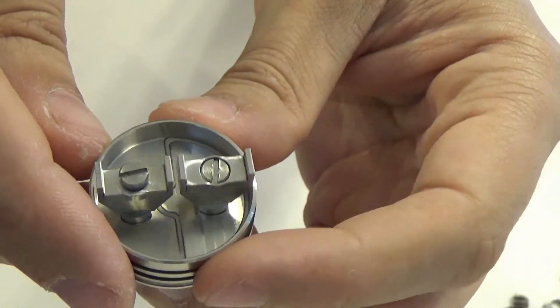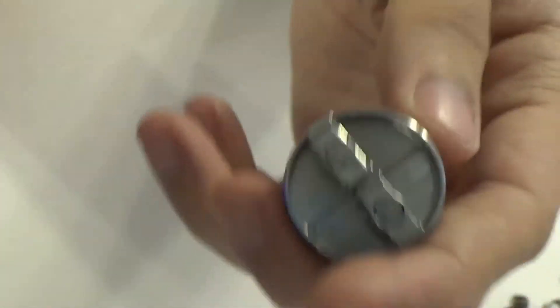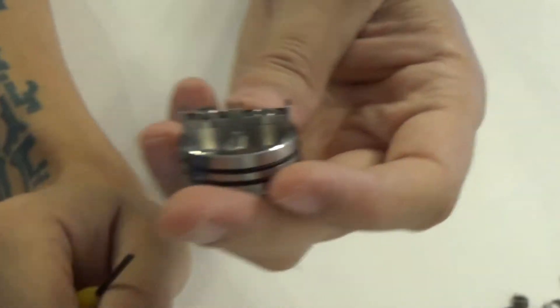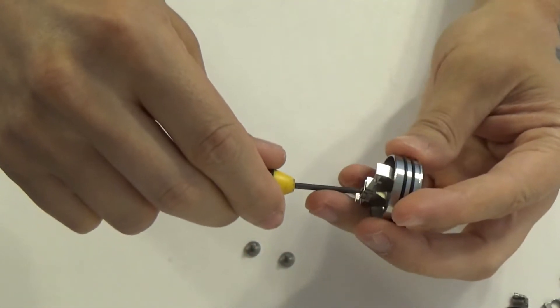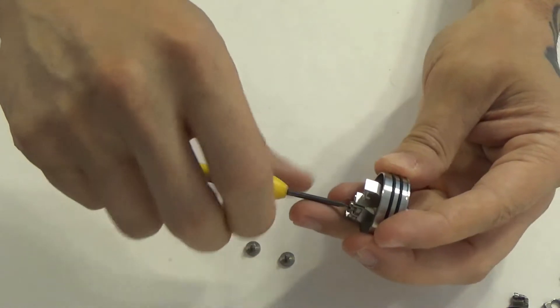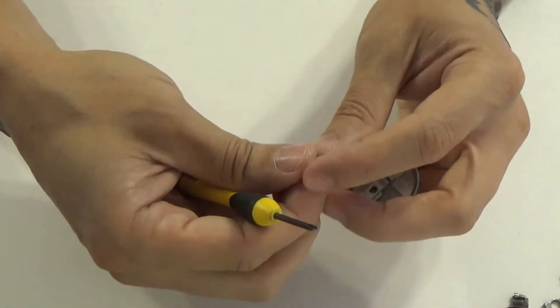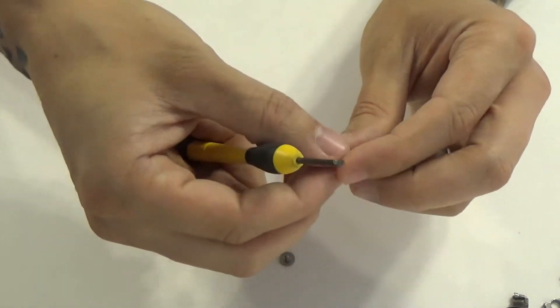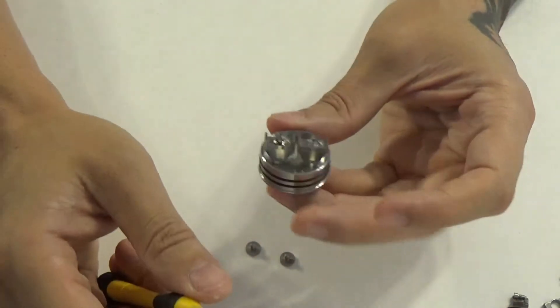So I'm going to go ahead and put a build in here. Work out the hot spots, wick it up. Building on these is really straightforward. All you do is trap the leads under the bottom of the clamp and underneath the screw on the postless deck. So there's really no trick to building on this. There's no trick to wicking it up. It's just really straightforward, really simple. So I'm just going to put a build in it and we'll go back up top and we'll talk about it and we will vape on it.